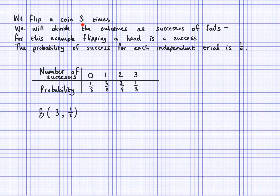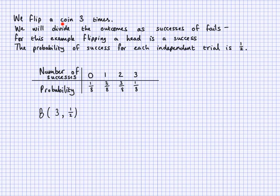Third, the outcomes of each trial must be divisible into exactly two categories — success or fail. For a coin, that's naturally heads and tails. For a dice, if success means rolling a five, then rolling a five is a success and any other number is a fail — so we can still divide it into two categories and use the binomial distribution. The notation B(n, p) describes this example.